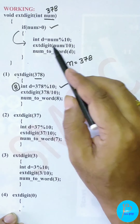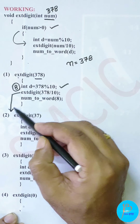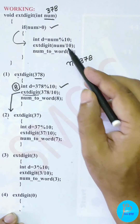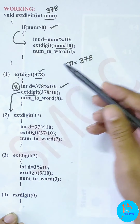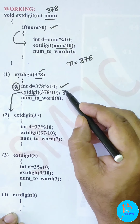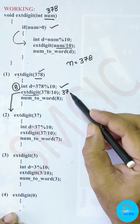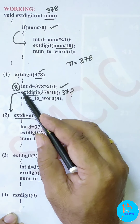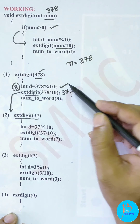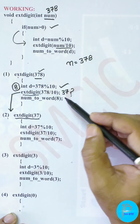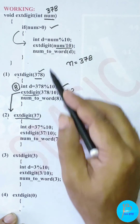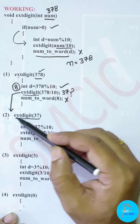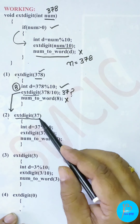After that, second line: extDigit is called again - the function calls its second copy. What is passed? 378 / 10 = 37. So with 37, the second copy is called and control shifts there. Notice: the first call's first line has executed, but the second line is now executing recursively, and the third line - numToWord - has not yet executed because control shifted to the second copy before reaching it.